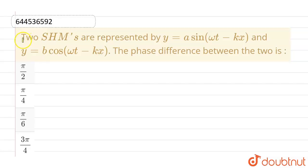Hello everyone. If we talk about this question, this given question is two simple harmonic motions are represented by y equals to a sin omega t minus kx and the second equation is y equals to b cos omega t minus kx. Now we have to find out the phase difference between these two.